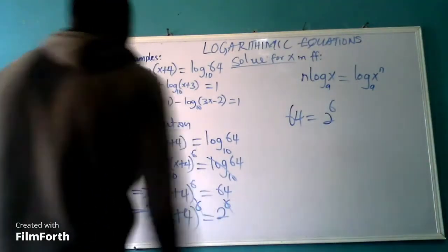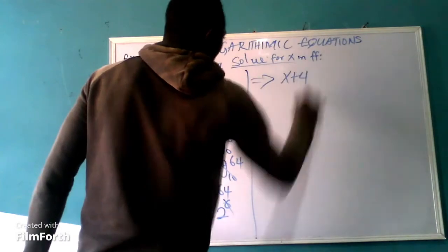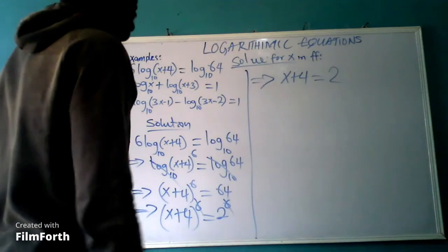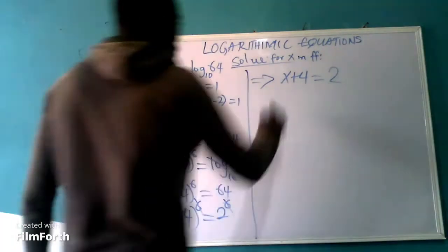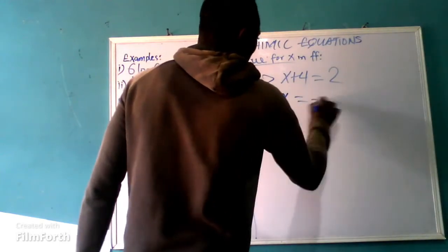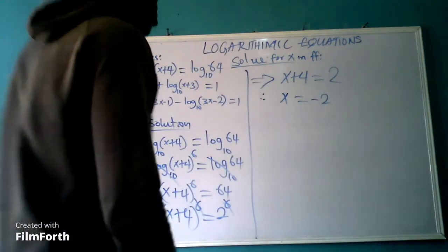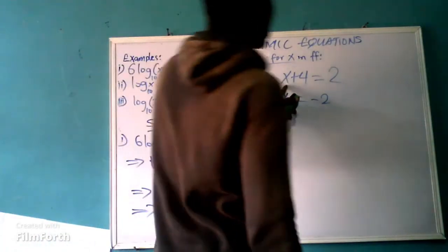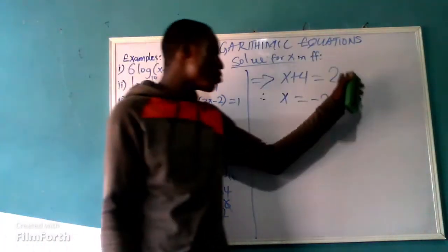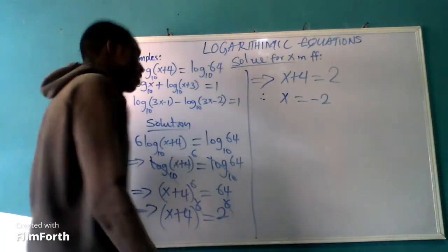So this implies that x + 4 equals 2 raised to power 6. Since both sides have the same power of 6, the powers cancel, and you are left with x + 4 equal to 2. Therefore x is equal to minus 2, because if you take plus 4 to the other side, that becomes minus 4, and minus 4 plus 2 gives you minus 2.